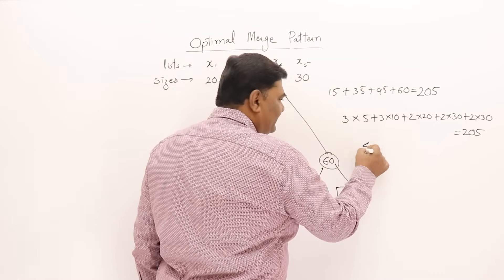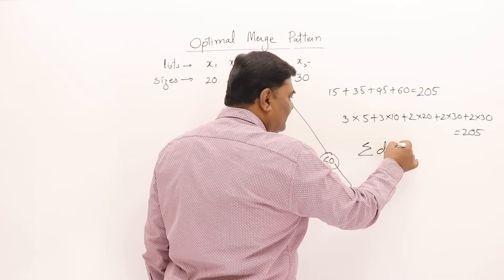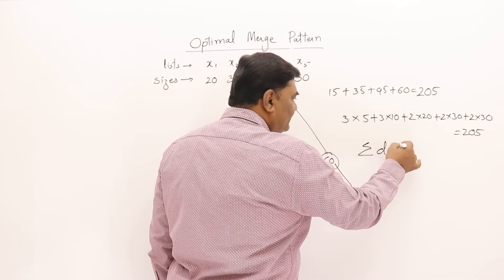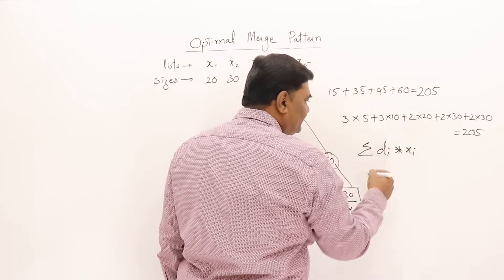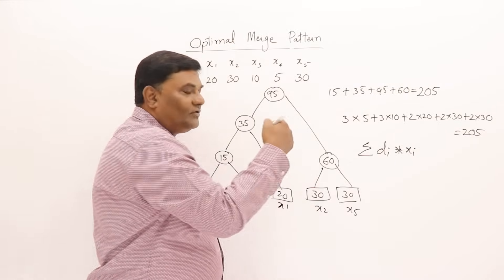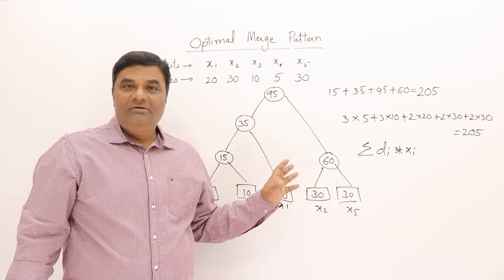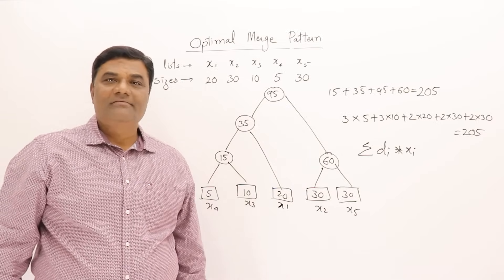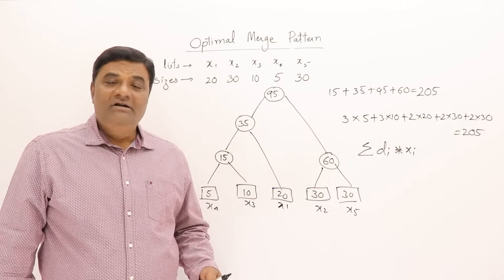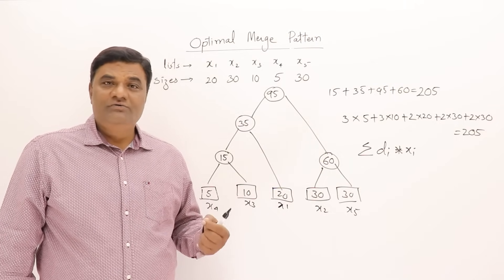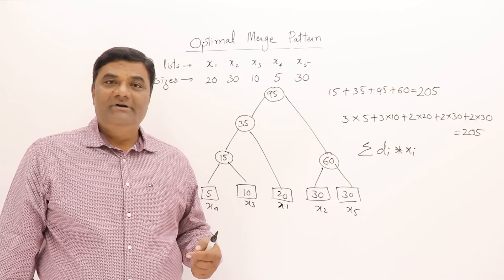So the formula for total cost of merging is the sum of di times xi — the distance of each node multiplied by its size. This gives the total cost of merging all files using the Optimal Merge Pattern. The problem is simple, but it is the foundation for Huffman coding, which will be covered in the next video.